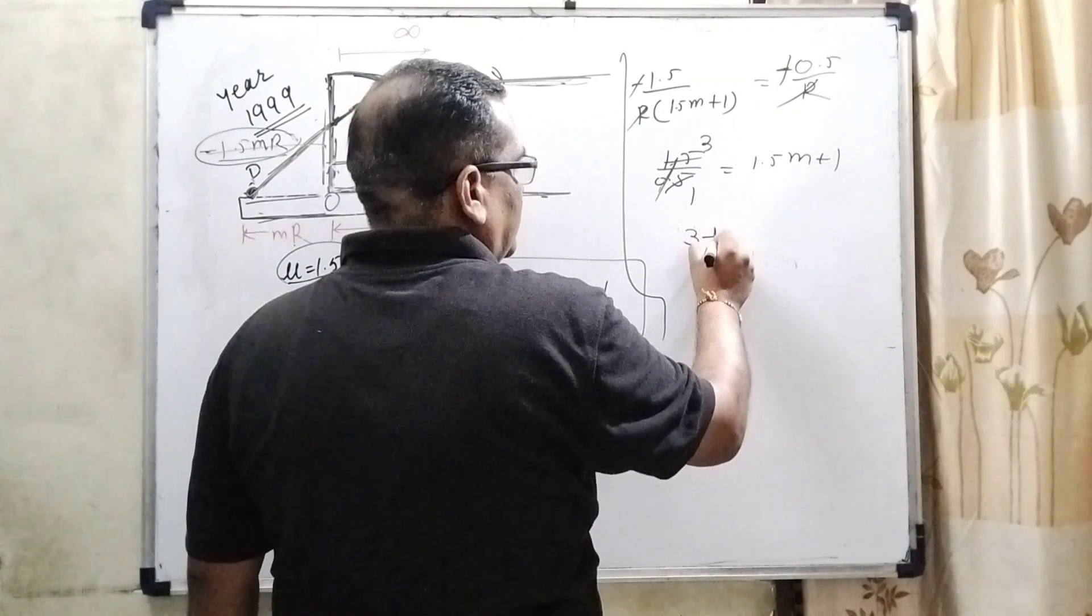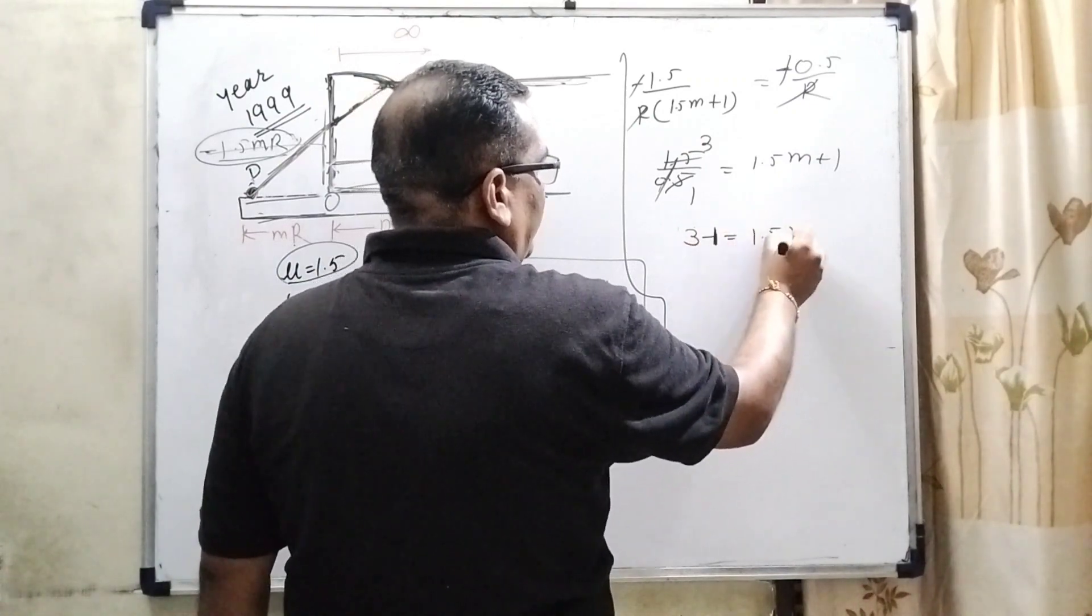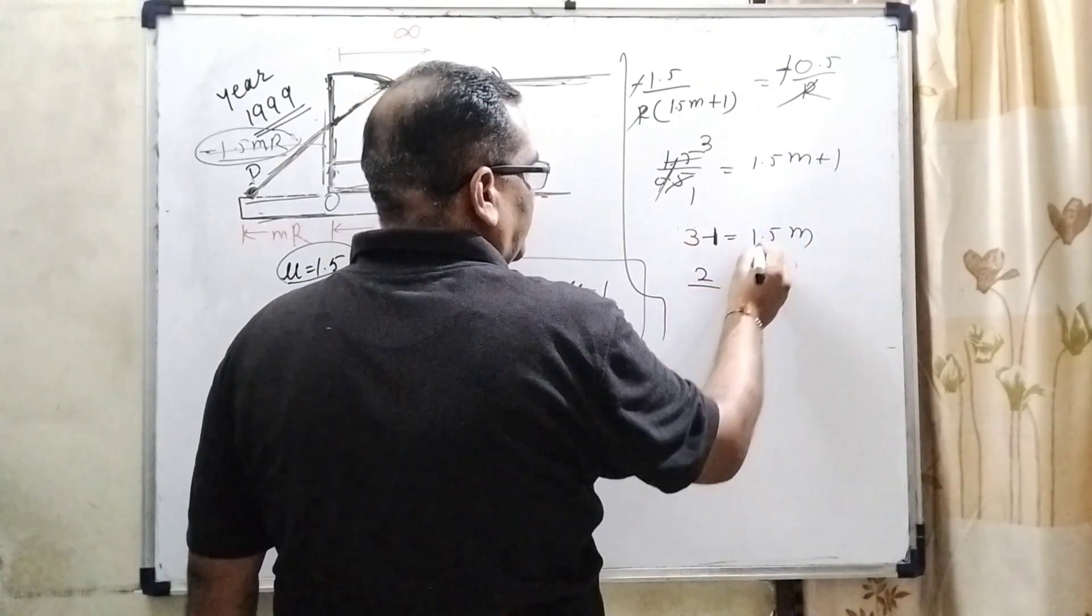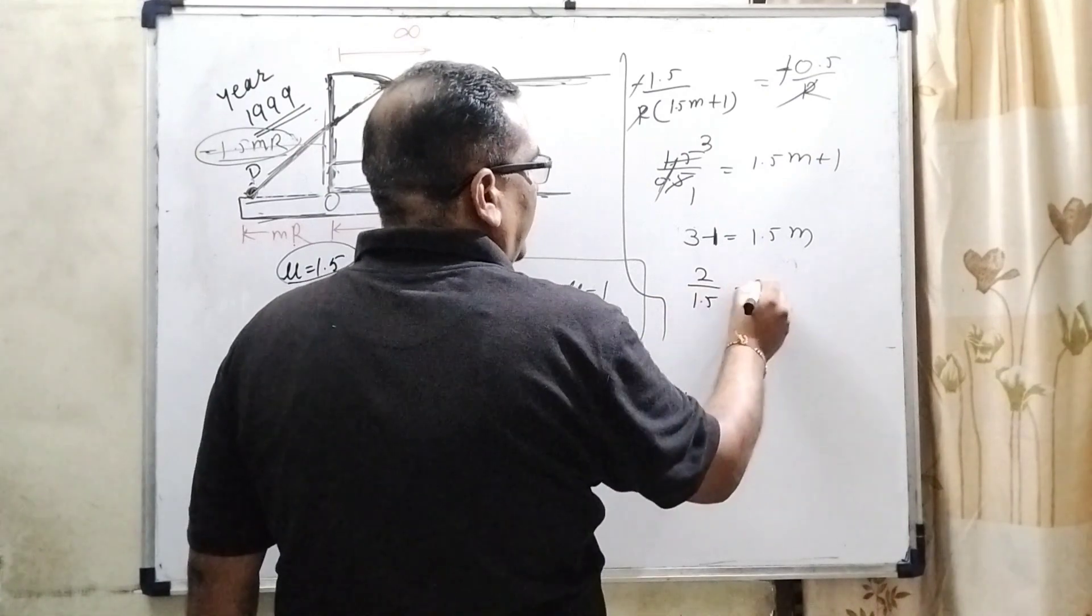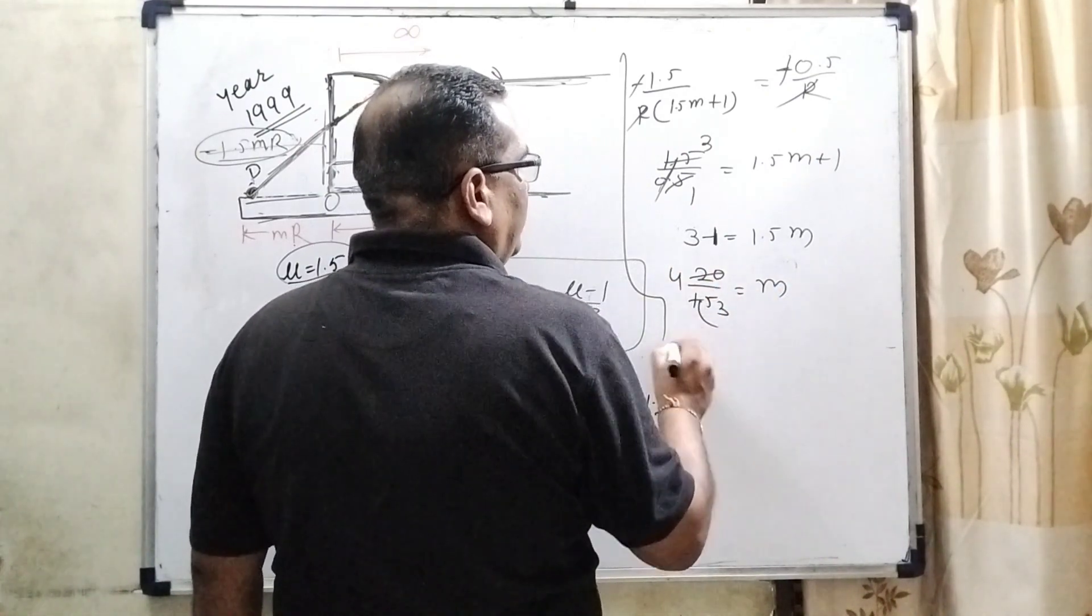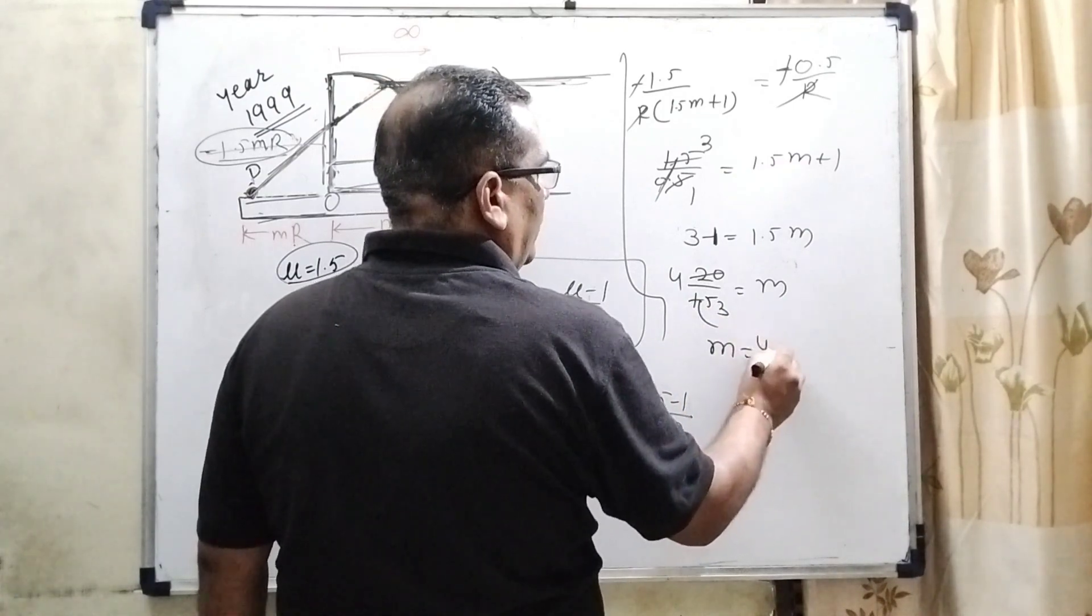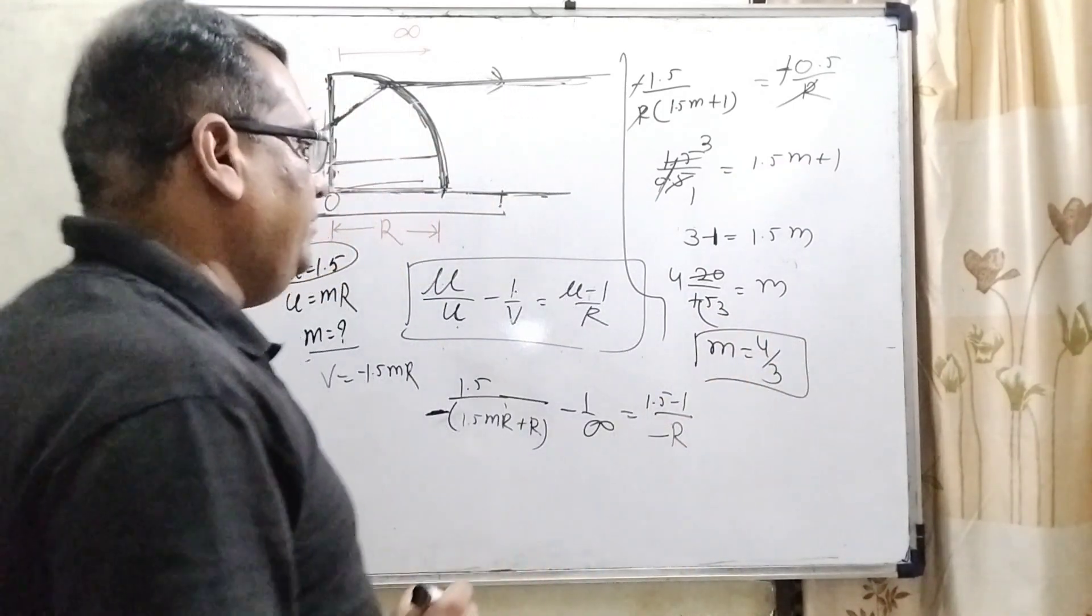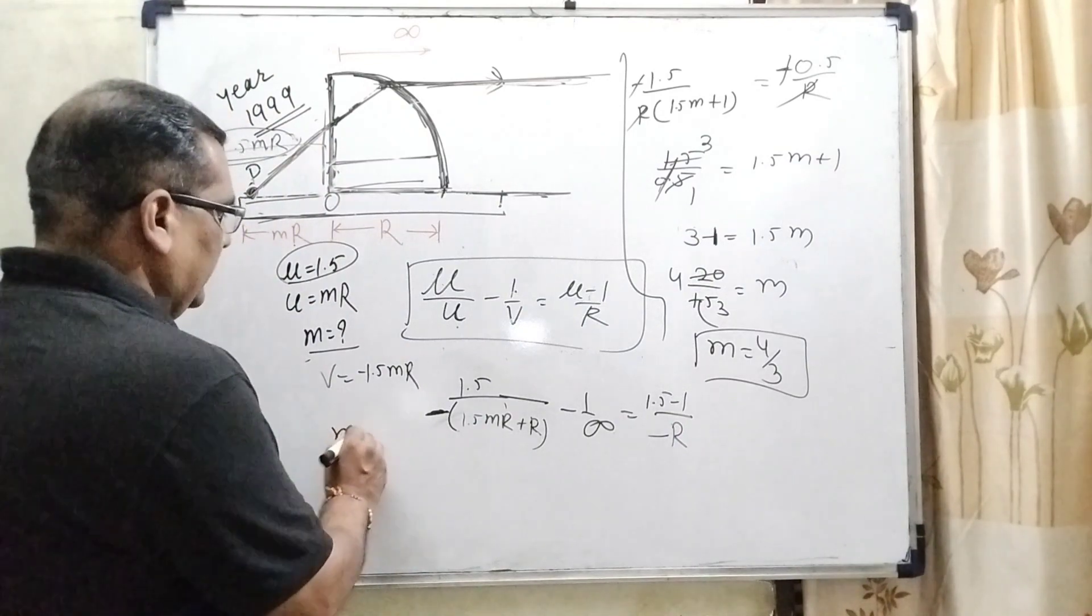Here transposing this term, that is minus 1, 1.5 m then become 2, 1.5 m. Then 5 times 4 is 20, 5 times 3 is 15. Then m equal to 4 by 3. So value of m is 4 by 3.